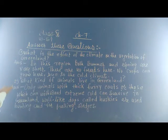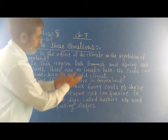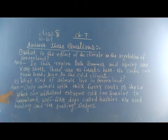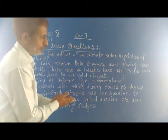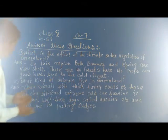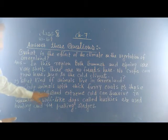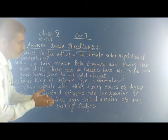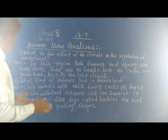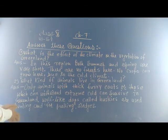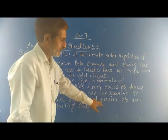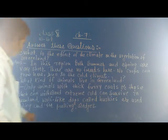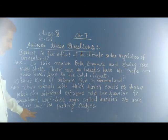Question number 2: What type of animals live in Greenland? Answer: Only animals with thick fur coats, or those which can withstand extreme cold, can survive in Greenland. Dogs called huskies are used for hunting and for pulling sleds.